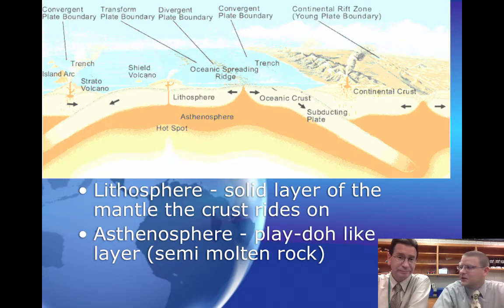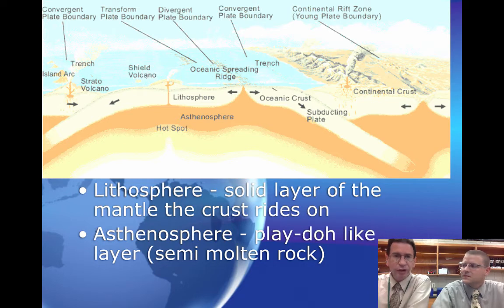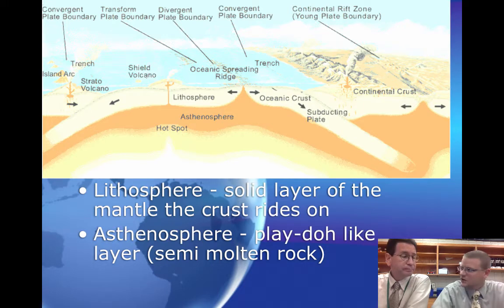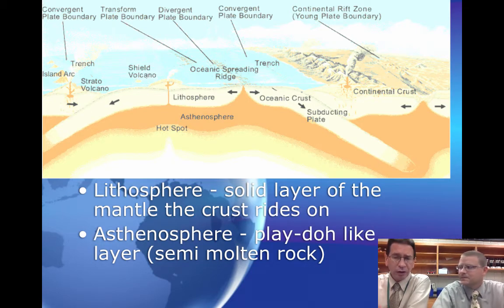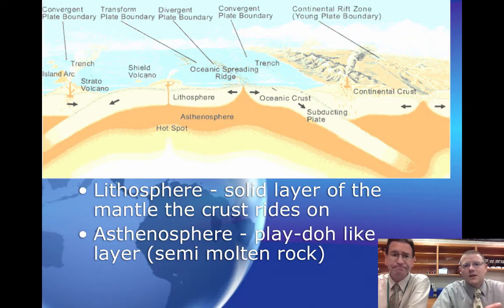But how do we even know that they move? The way to know that the plates move, at these boundaries especially, is to look for the energy that they create when they do so. The energy they might create would be volcanic activity — we see mountains and volcanoes — but what other types of energy? Well, they also transform into vibrations, like in the case of earthquakes. Earthquakes should give us an indication of where these boundaries actually are.